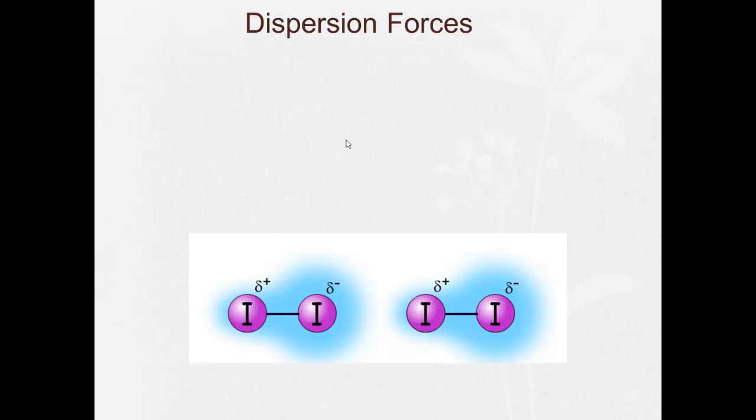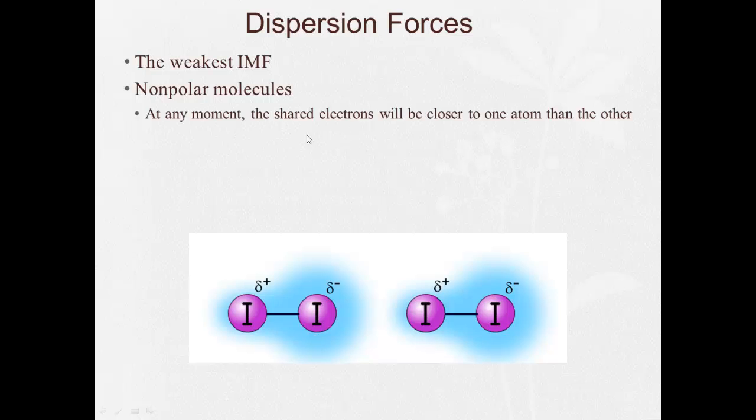Finally, dispersion forces. These are the weakest of the intermolecular forces, and these are found in non-polar molecules. Now, take a look at the picture down here. You have an iodine covalently bonded to another iodine. And overall, the electrons are shared equally. But just like if two of us played a game of hot potato, at any given point in time, only one of us is more likely to have the potato. In this case, one of the iodines is more likely to have the electrons. So at any moment, the shared electrons will be closer to one atom than the other.